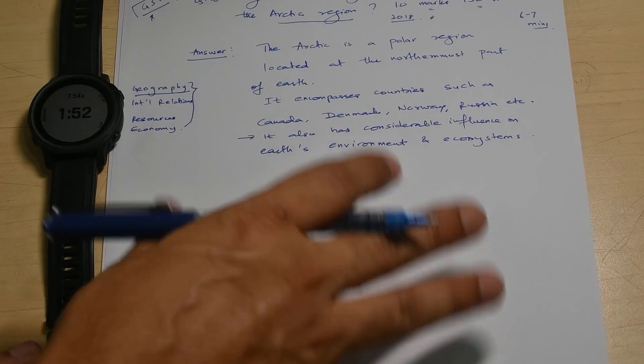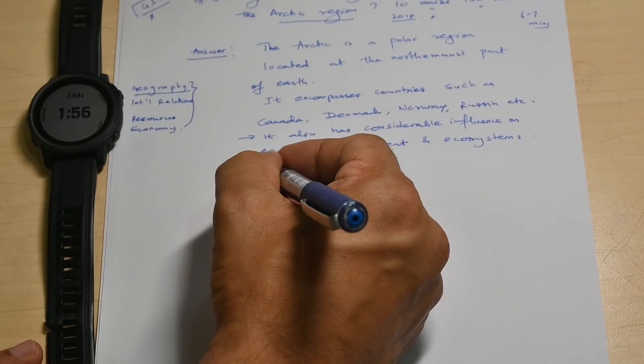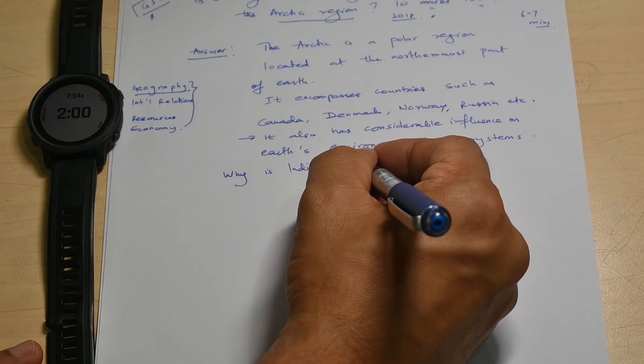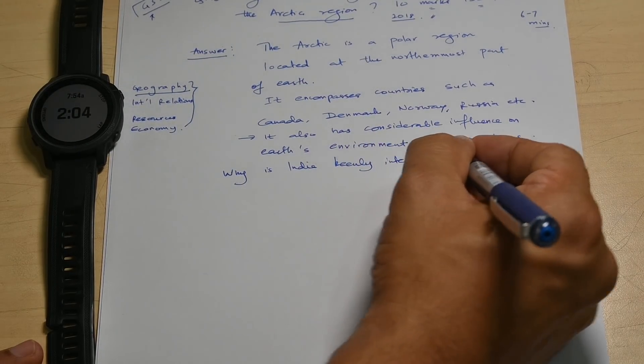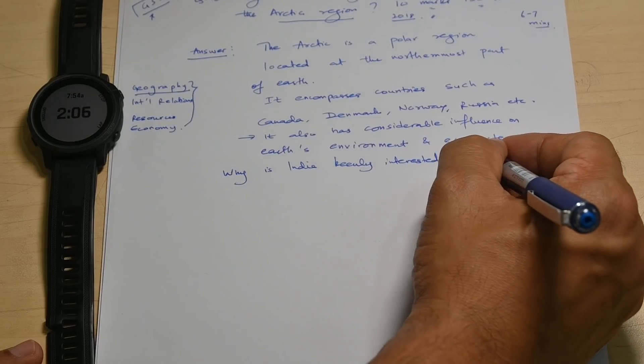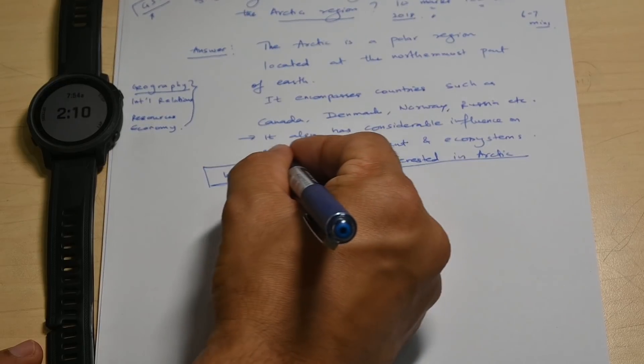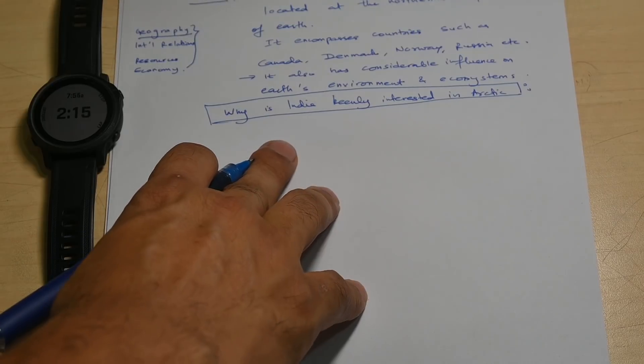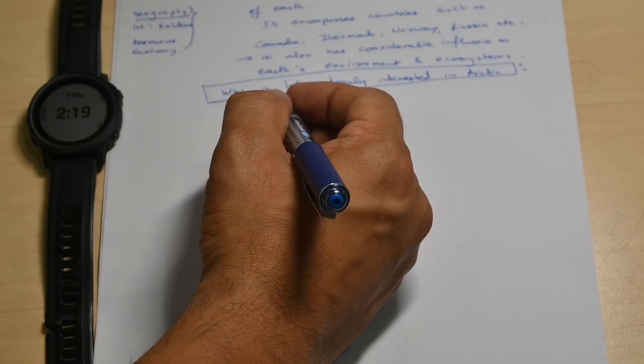It encompasses countries such as Canada, Denmark, Norway, Russia, etc. It also has considerable influence on Earth's environment and ecosystems. So I'm also telling the importance so that before I delve into the actual question, people know it. So it's a very short introduction, little bit longer than I like, but I will jump into why is India keenly interested in Arctic. Now I'll box it. Remember to box something to draw the attention of the reader so they can straight away go to that point.